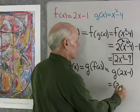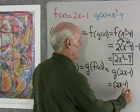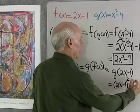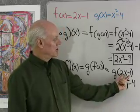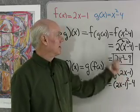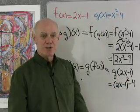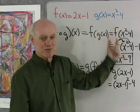I'm just going to write this as 2x minus 1 quantity squared minus 4. I just did the same thing here to 2x minus 1 that I did to x up here. I always do the same thing once I have the function rule like that.